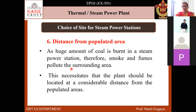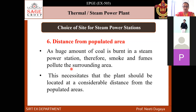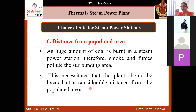The last point for site selection of a steam power plant is distance from the populated area. Coal or thermal power plants produce flue gases, ash, fumes, and smoke — all causing significant pollution. Since a huge amount of coal is burnt, smoke and fumes pollute the surrounding area. This necessitates that the plant should be located at a considerable distance from any densely populated area.